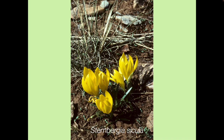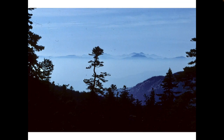You can tell a Sternbergia from a colchicum by the ovary at the base of the corolla, just like you see in daffodils. So that wraps up this introductory talk. There is of course much more to be seen in the autumn across Greece and the Balkans, but hopefully this has whetted your appetite to see more and helped you to recognise a geophyte when you see one.